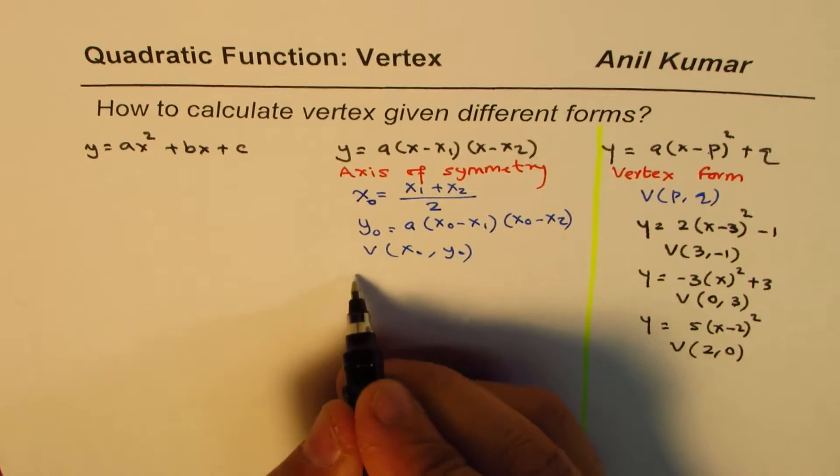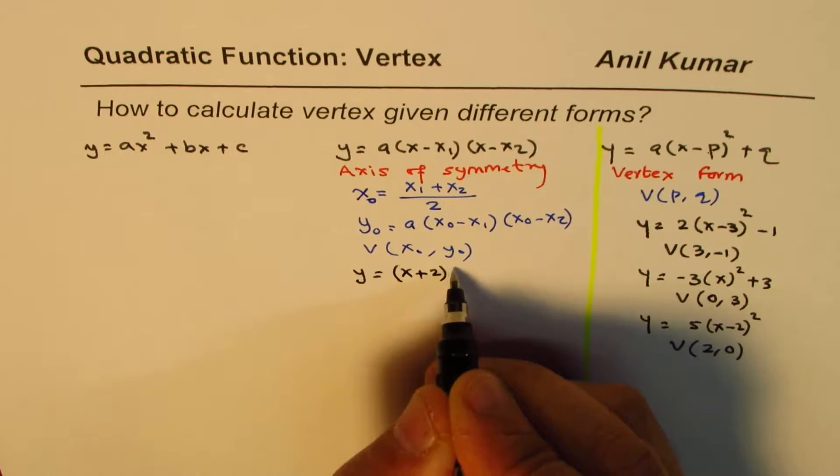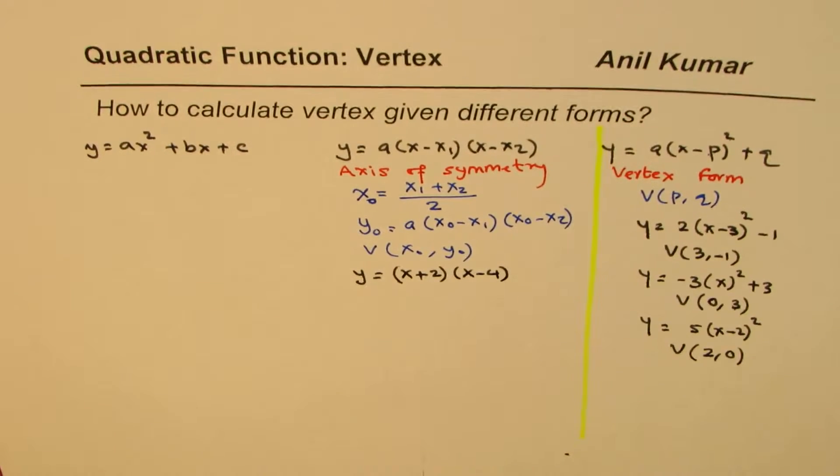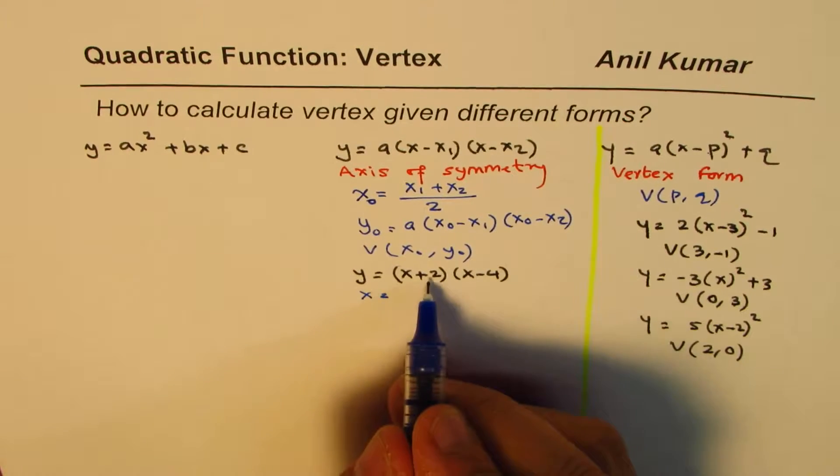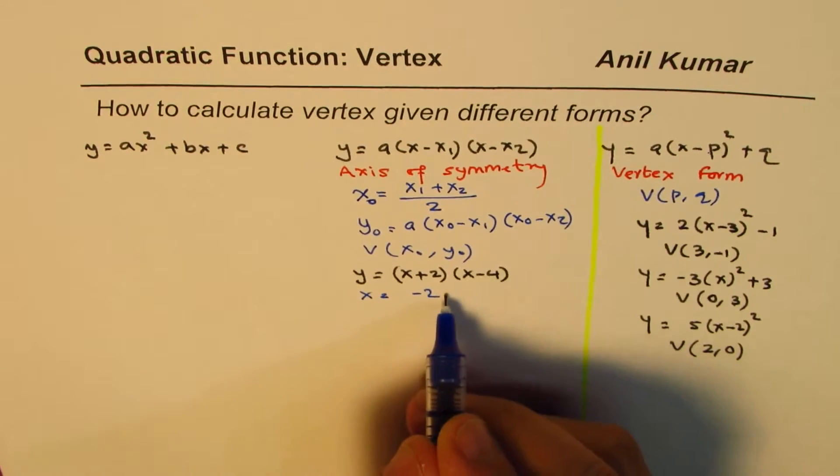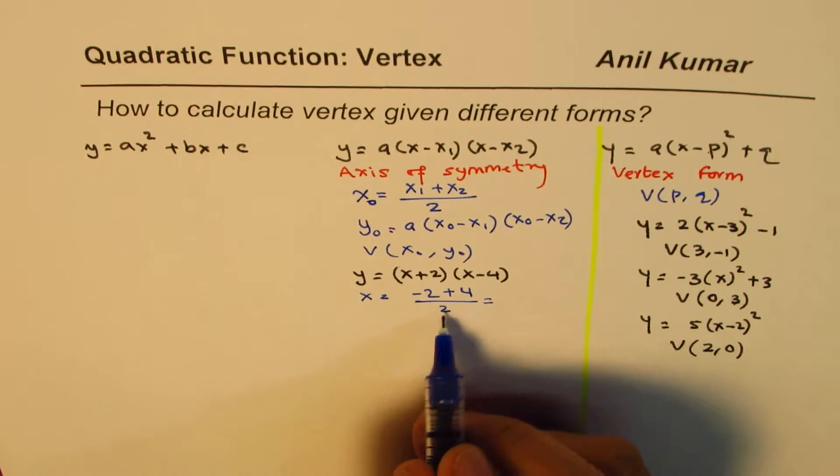Let me take an example. If I have y equals 2(x plus 2)(x minus 4), in that case axis will be right in the center. This will be 0 for minus 2. This will be 0 for plus 4. Remember that. Divide by 2.